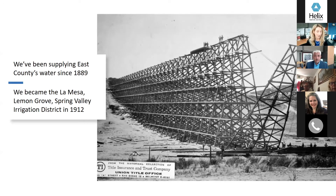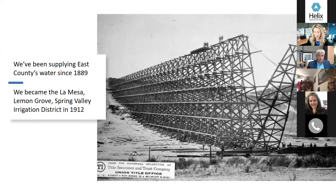We have been supplying East County water since 1889 — literally part of the history of East County. We came close to our current name when we became the La Mesa-Lemongrove-Spring Valley Irrigation District in 1912. This picture shows a wooden trestle constructed to bring water via a wooden flume from the Cuyamacas to our service area. We have a wonderful history presentation each January, and with things improving, we may be able to hold it in person in January of 2022. If you're a history buff, keep an eye on our website.